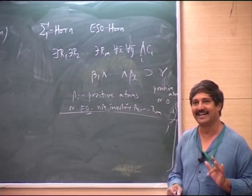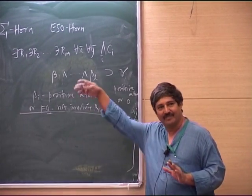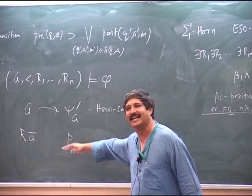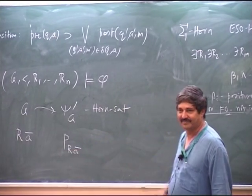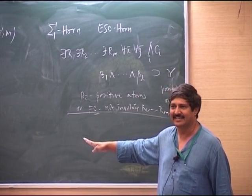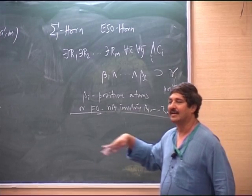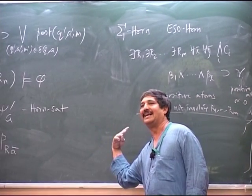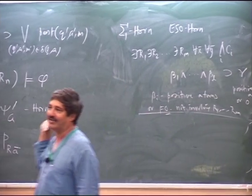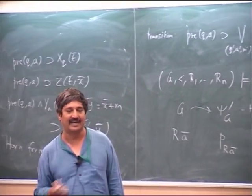So this is the outline. One has to fill in all the details, but this is something I think I can leave people to do. The more difficult part is to show that given any machine, I can come up with an SO horn sentence, and that part is done.